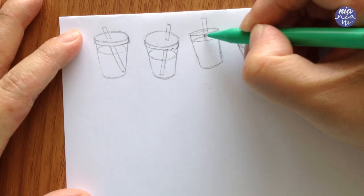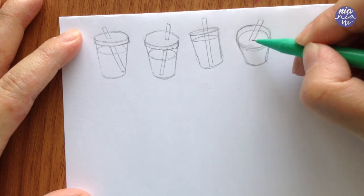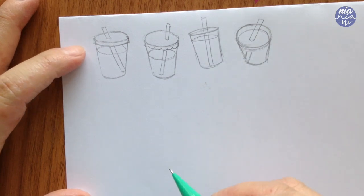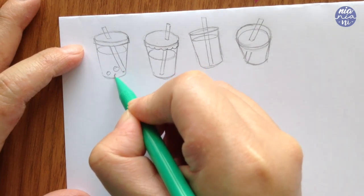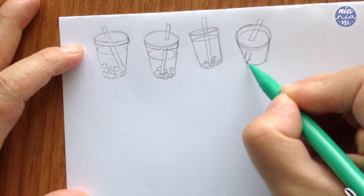It would also be nice to slightly tilt the straw. I think it would make the composition more fun. Now all I need to do is finish off with the boba and I'm just going to draw circles at the bottom of the drink and I'm going to slightly vary the size. And that's it.